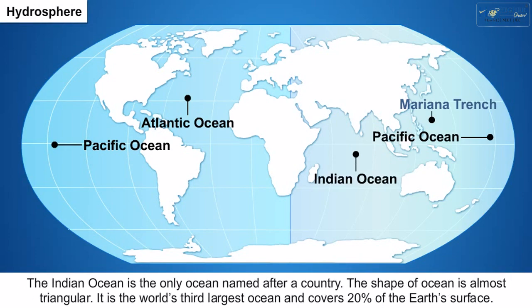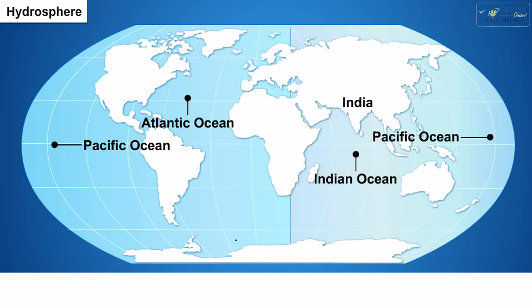3. The Indian Ocean is the only ocean named after a country. The shape of the ocean is almost triangular. It is the world's third largest ocean and covers 20% of the Earth's surface.